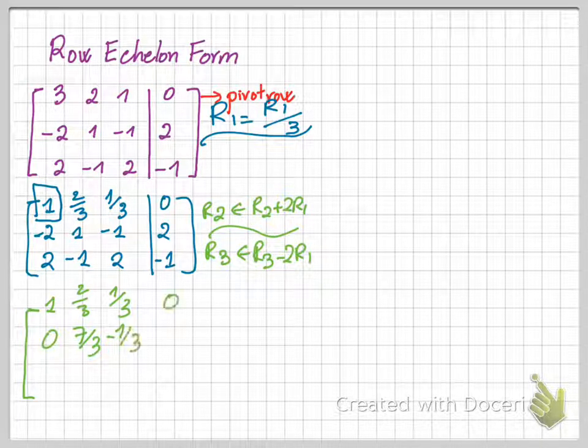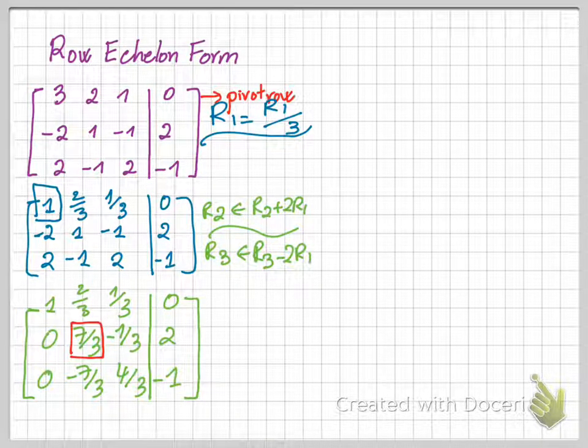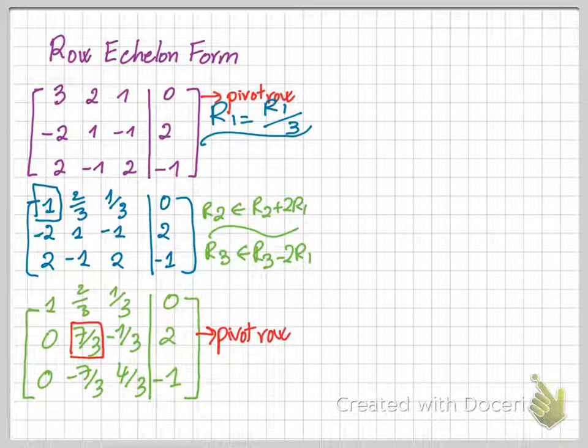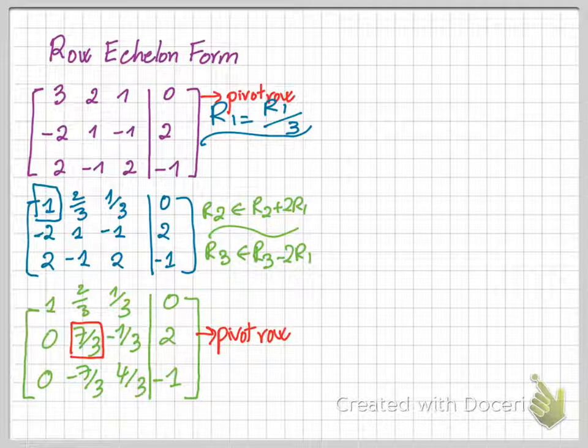And your new matrix will give you row 2, which now is the pivot row, because row 1 is already done and you go to row 2, and row 2 only has one leading zero. So then you can assign it as a pivot row.